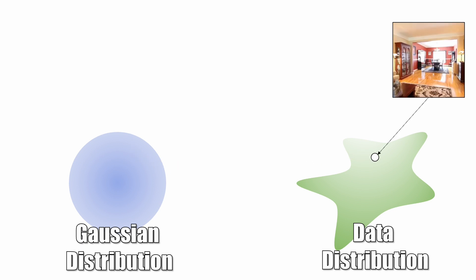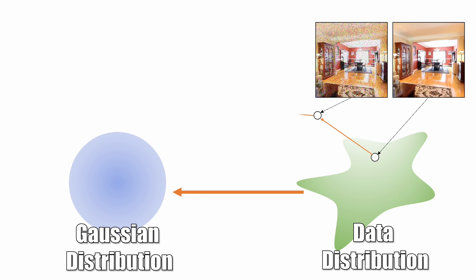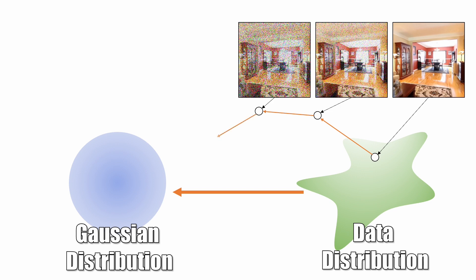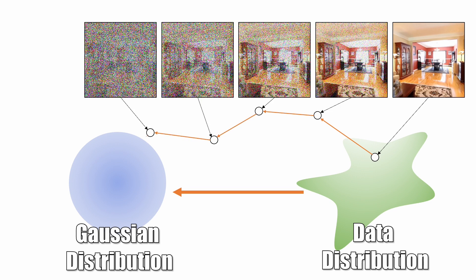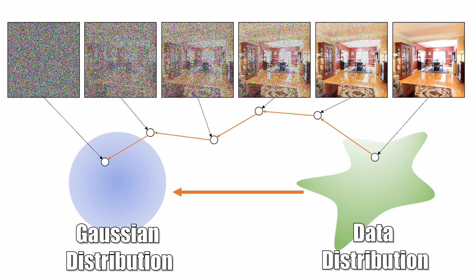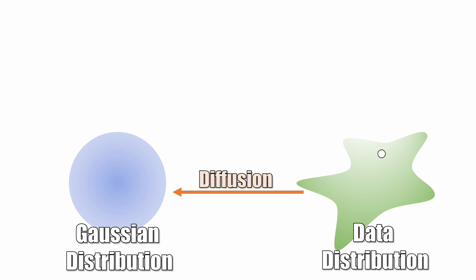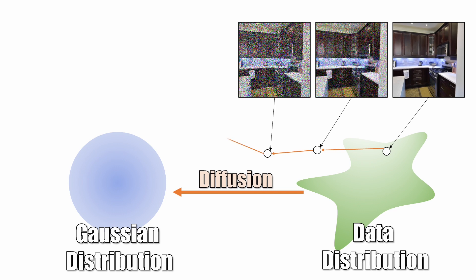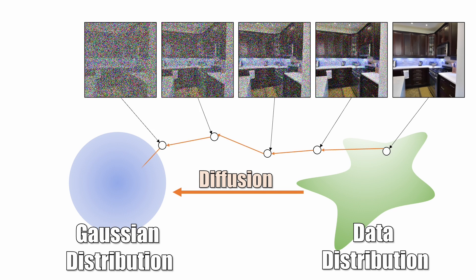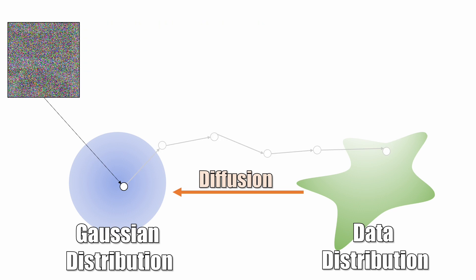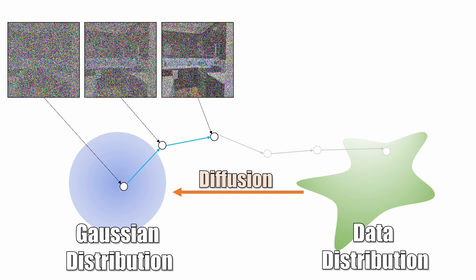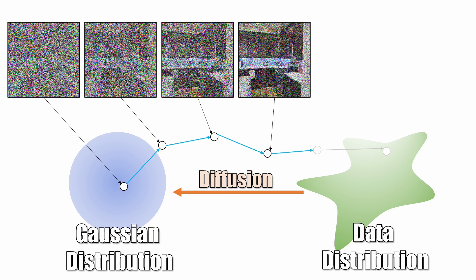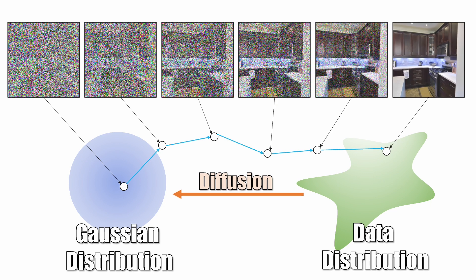But this is not easy. The other direction is much simpler. We take a sample from a data distribution and progressively add noise to it until it becomes pure noise. This process is known as diffusion. Here's another example. Notice that here we create a path from a data sample to a noise sample. If we can somehow traverse this path backward, we can transform a noise sample back to the data sample.